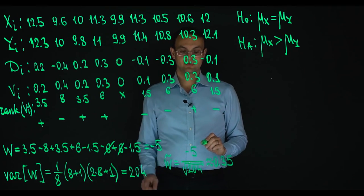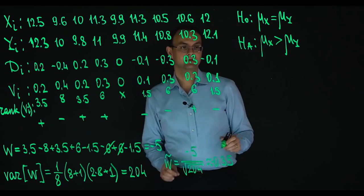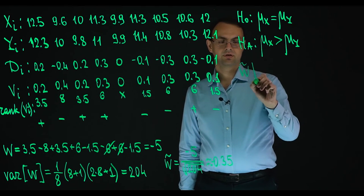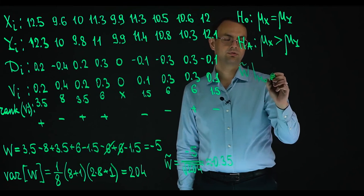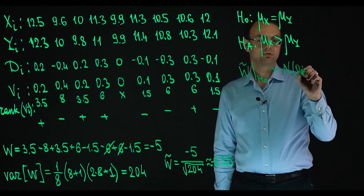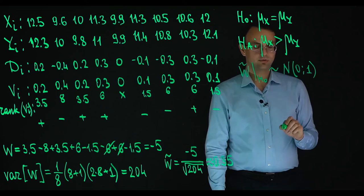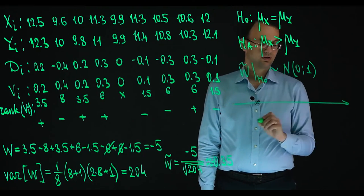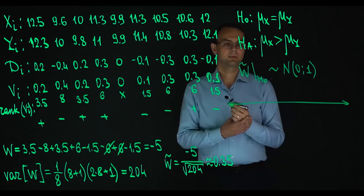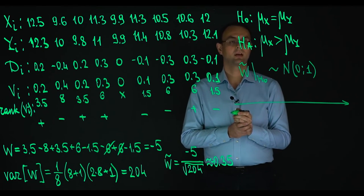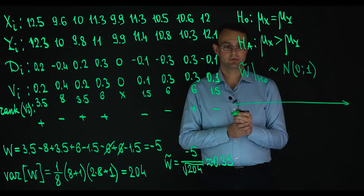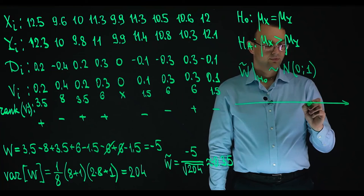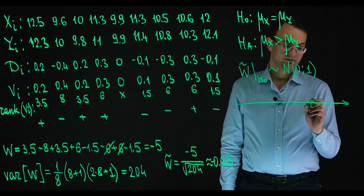And so then we say that under null hypothesis, W tilde follows standard normal distribution. And so we can construct the acceptance and critical regions. So greater sign, then we have right-tailed critical region.